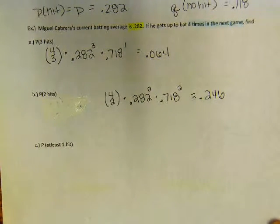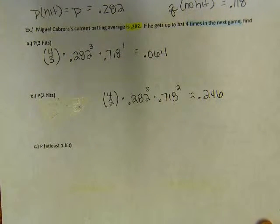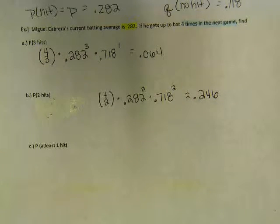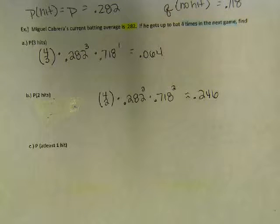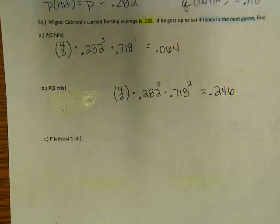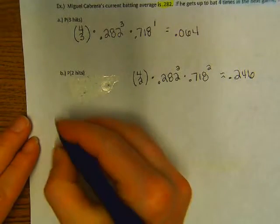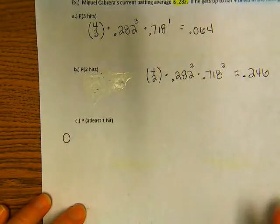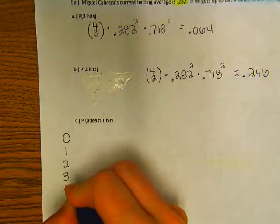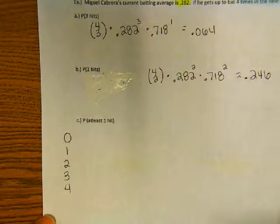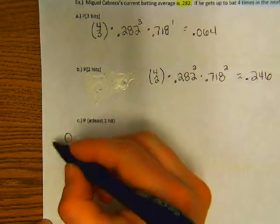How about at least one hit? Oh no, at least. Okay, so hear me out here. Remember what we said. Let's write the whole set out. He could get zero hits, one hit, two hits, three hits, or four hits. Agreed? At least one would mean...